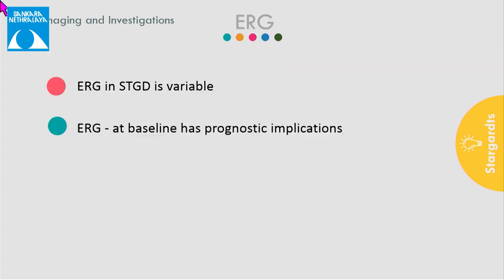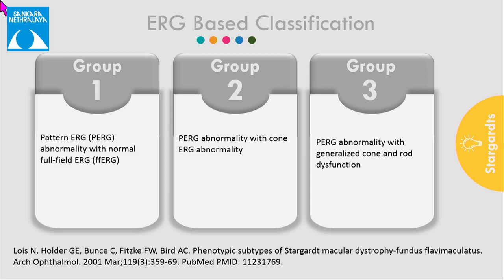ERG in Stargardt's disease is variable, and ERG at baseline has a prognostic implication. Lois et al. gave an ERG-based classification of Stargardt's disease dividing patients into three groups. Group 1: abnormal pattern ERG with normal full-field ERG. Group 2: abnormal pattern ERG with cone ERG abnormalities. Group 3: abnormal pattern ERG with cone and rod dystrophies. These ERG findings did not depend on age of onset, duration of disease, or clinical fundus presentation, concluding that these three types could represent three different phenotypes.